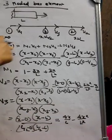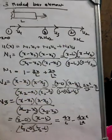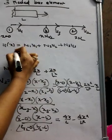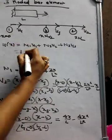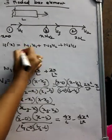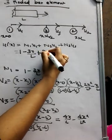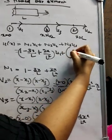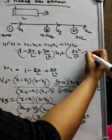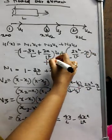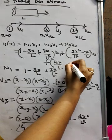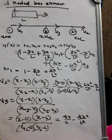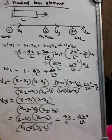So, you can write the equation: N1, N2, and N3, and substitute the values. N1 is (1 - 3x/l + 2x/l²)*u1, and similarly for N2 and N3. This is how you calculate the shape function. Thank you.